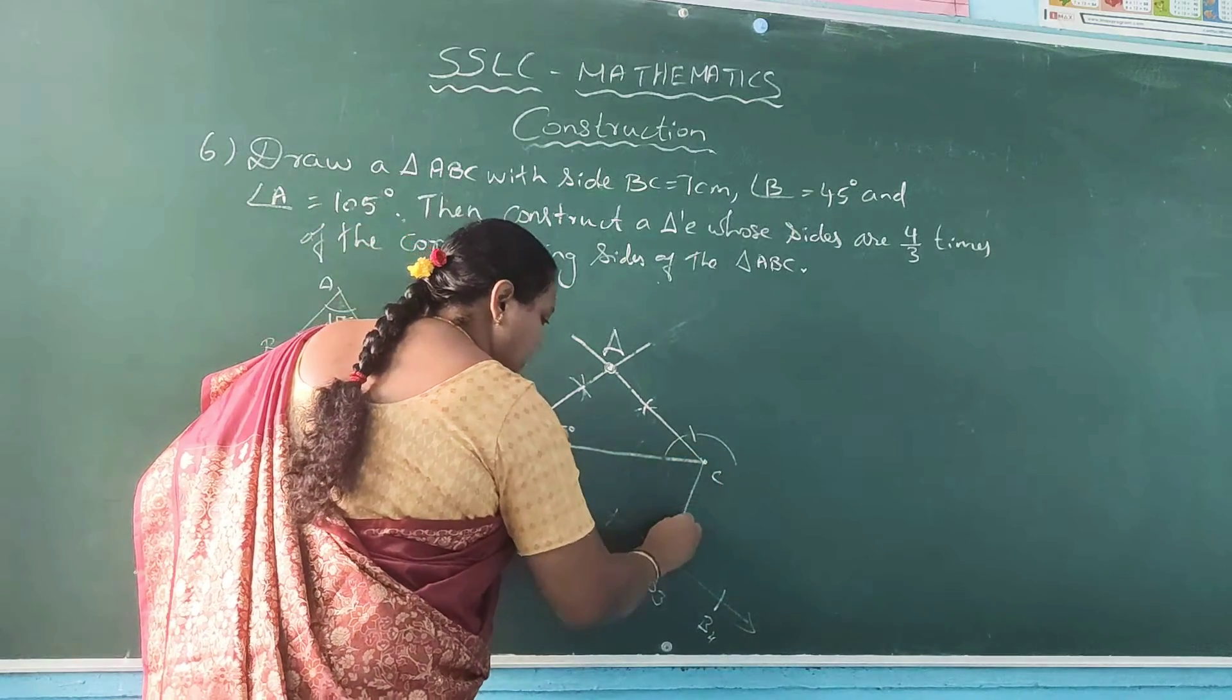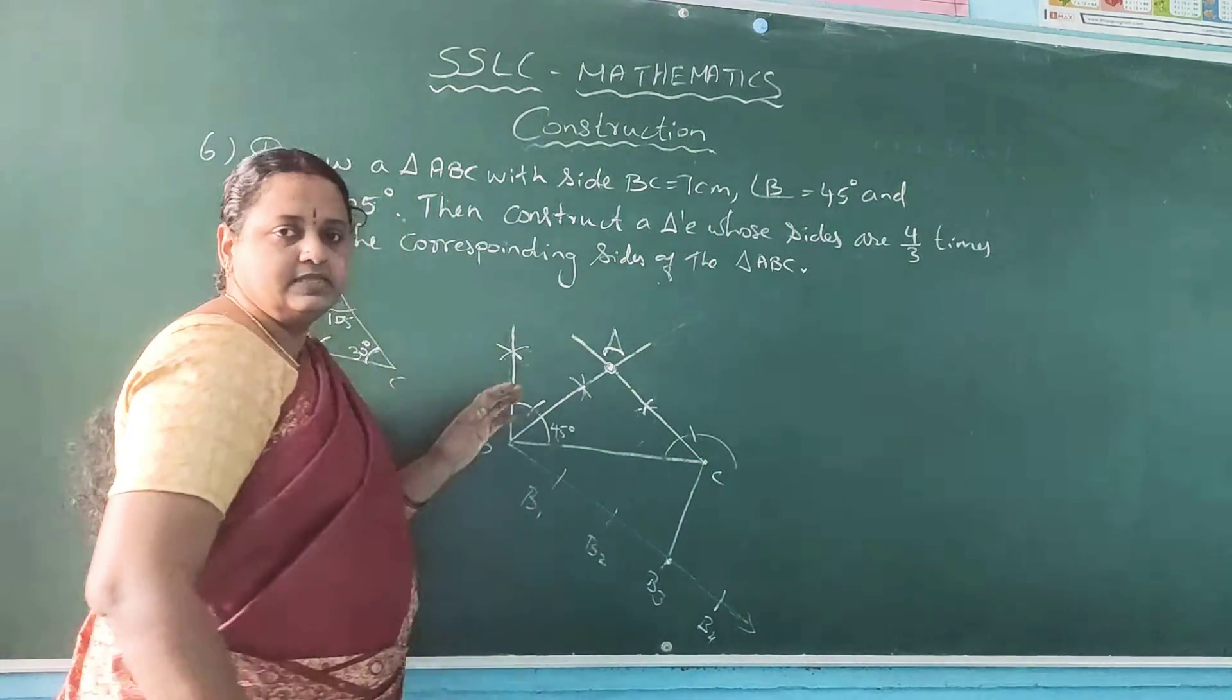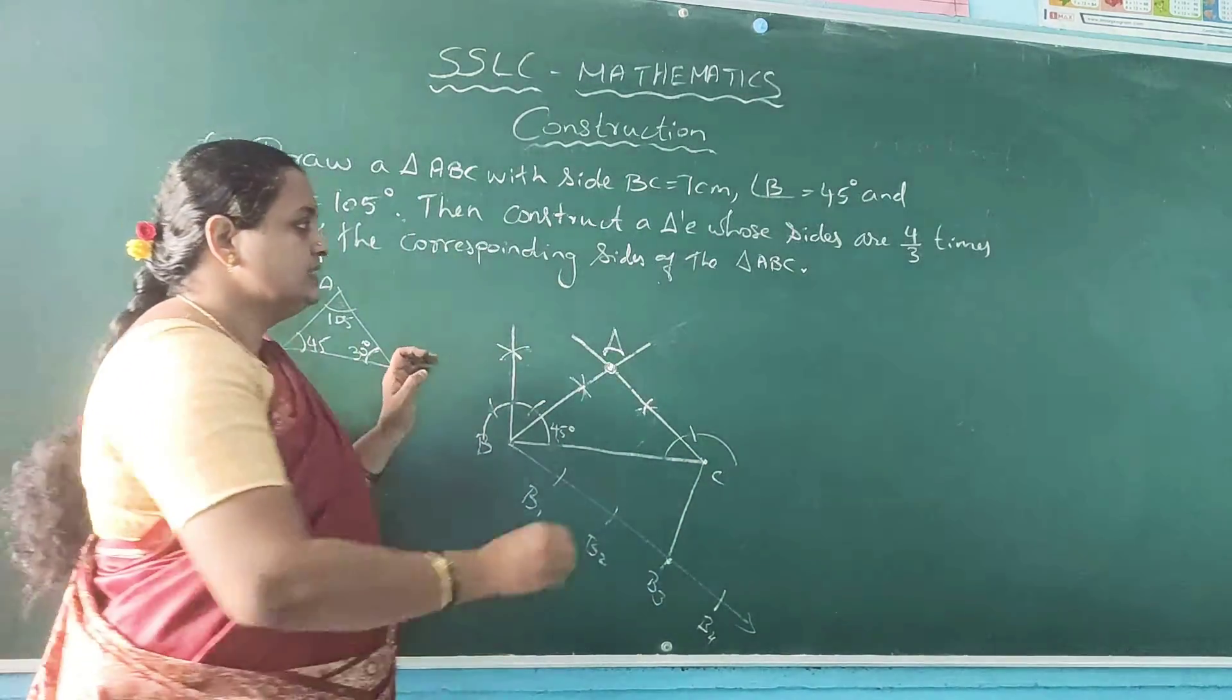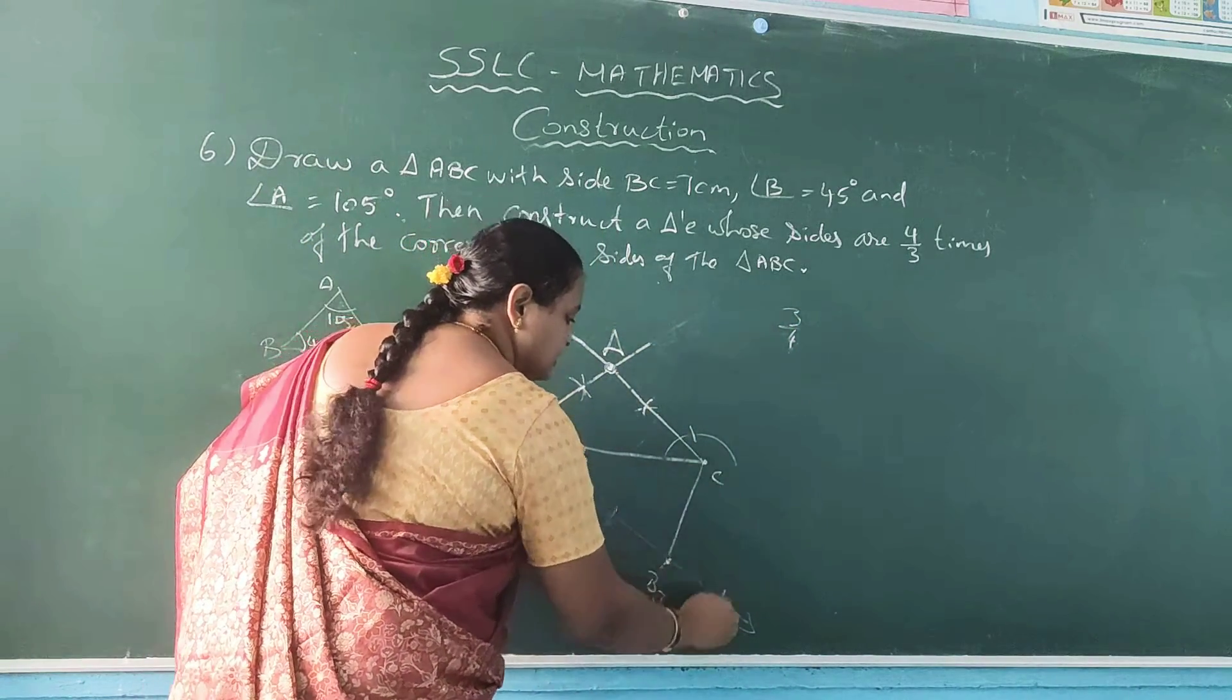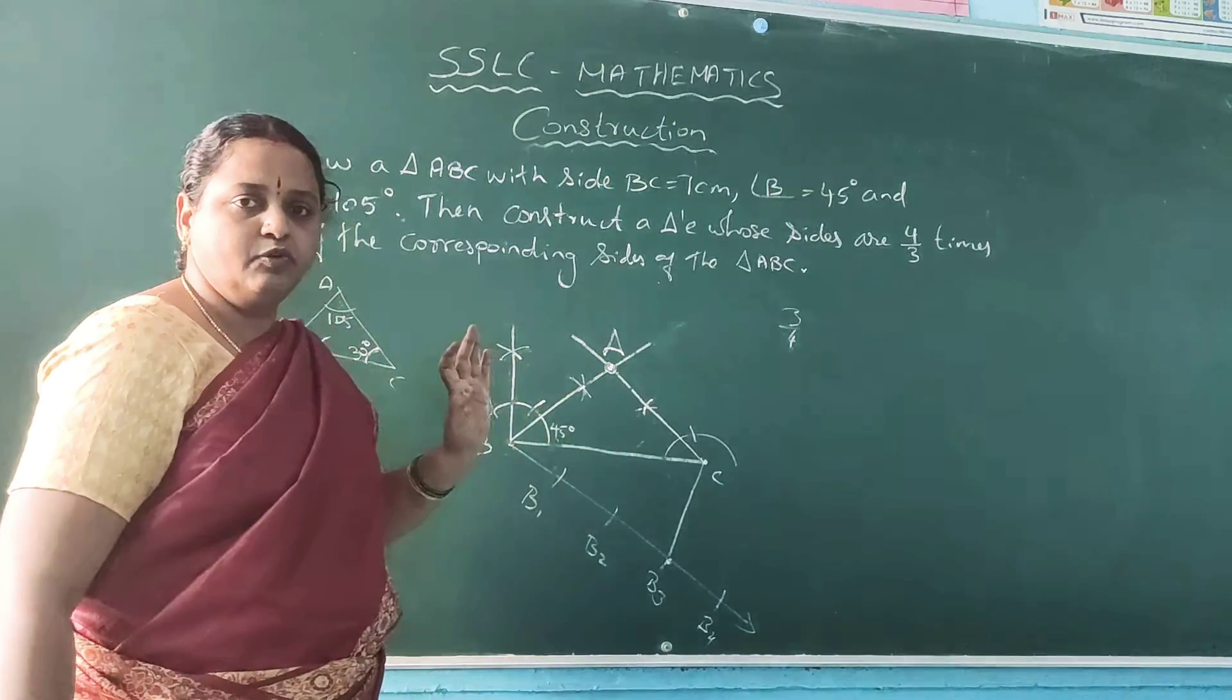And join C with the denominator 3. Always, if this is 3 by 4, you should mark 4, join C with the denominator 4.